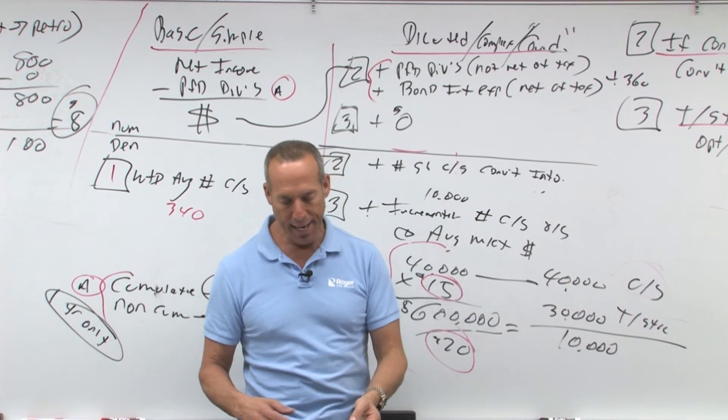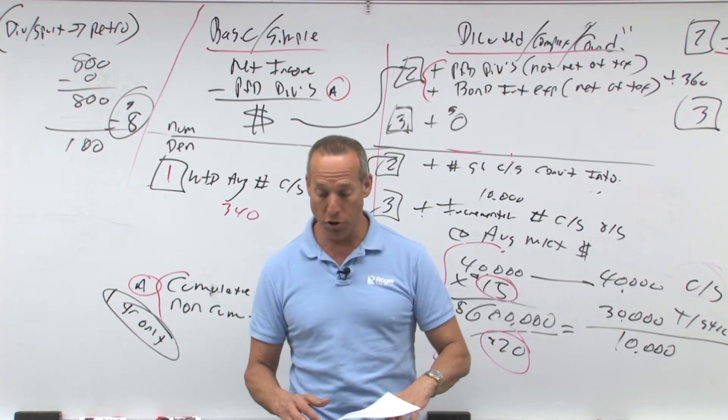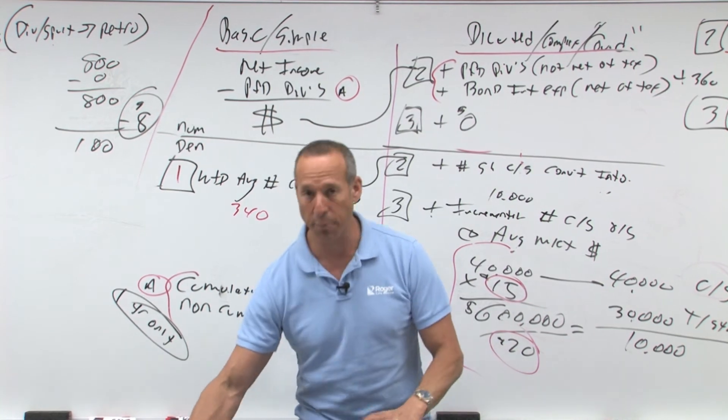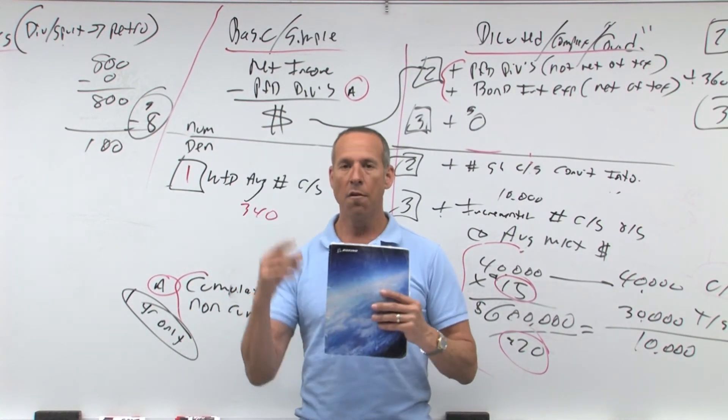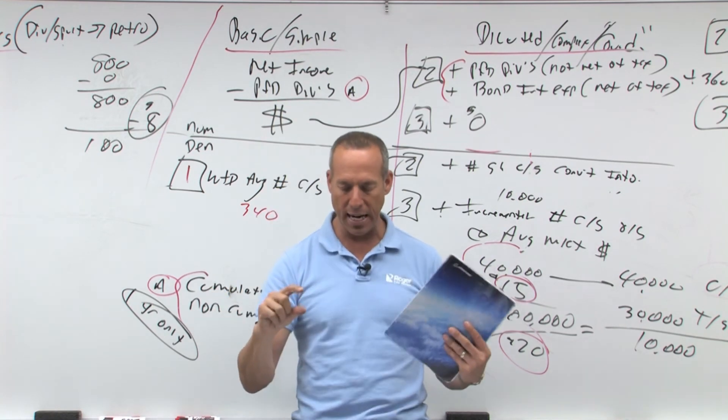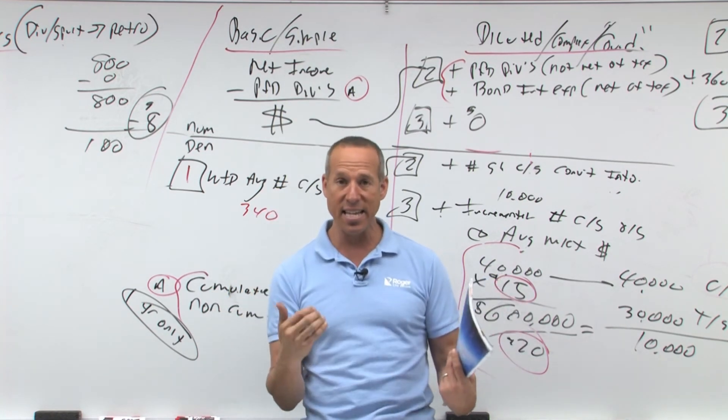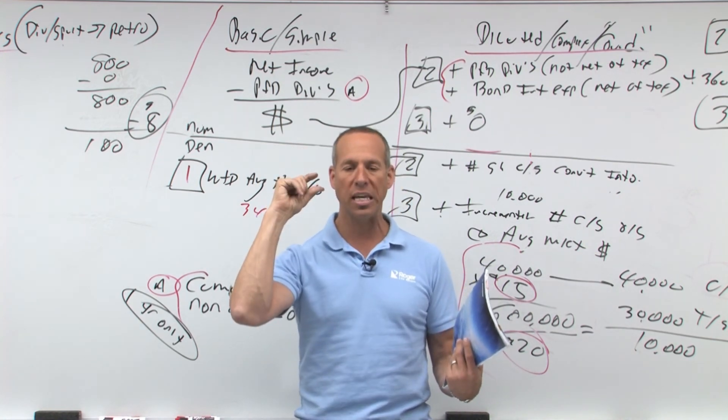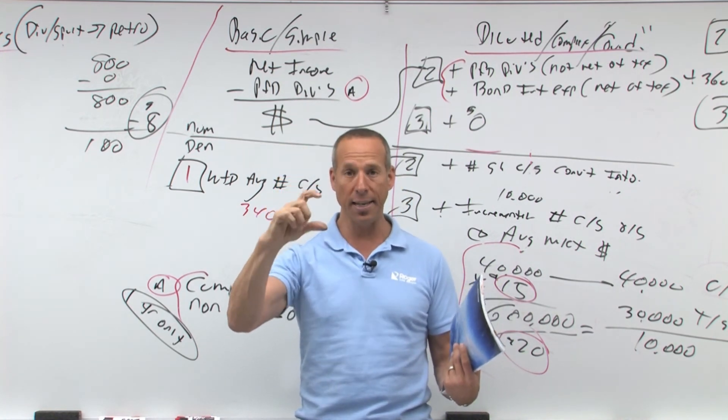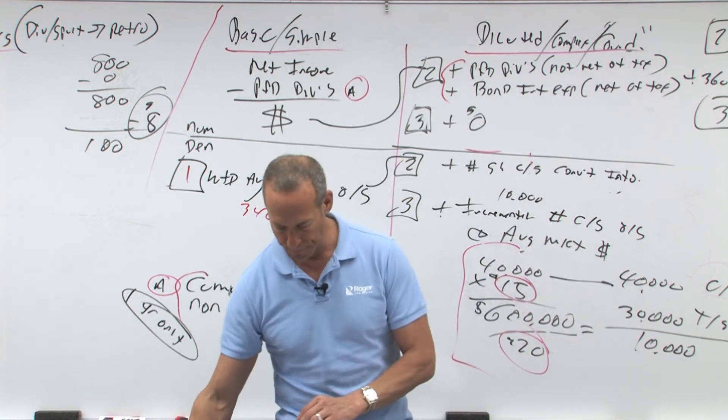So again, it was called basic, it's called diluted. Those are the two different things we're going to have to look at. Those are required to be shown where? On the face of your income statement. So where? For income from continuing and from net income and the discontinued, disposal and extraordinary. You can show either for the both as well, in the face or also in the footnotes.